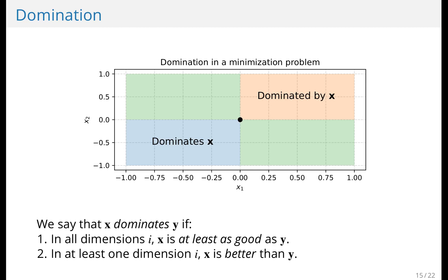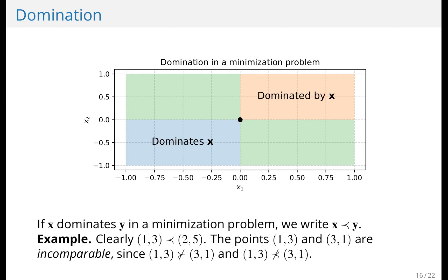If we look at this figure now, and this is a minimization problem, so going to a lower value in x1 and x2 is better — the blue area would be dominated by the black dot x. And the orange area in the upper right corner are the points that would dominate x.